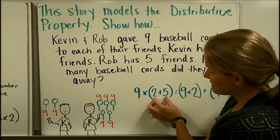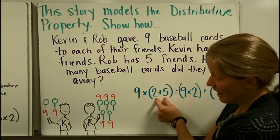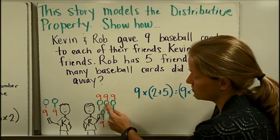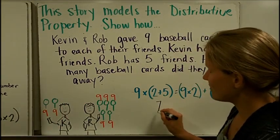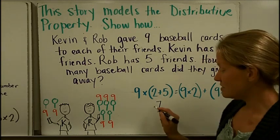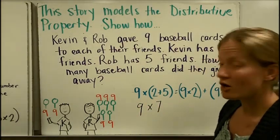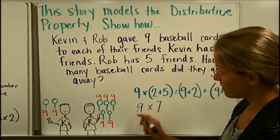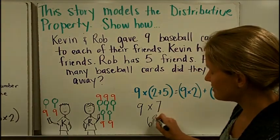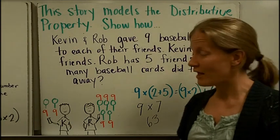We could first add together how many friends they have. So we have 1, 2, 3, 4, 5, 6, 7, or in other words, 2 plus 5 makes 7. And then we could multiply those number of friends times 9 cards apiece. 9 and 9 and 9. Instead of doing repeated addition, we could do 9 times 7 and get 63 baseball cards. But we could solve that another way.